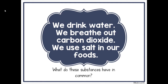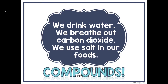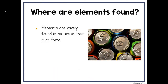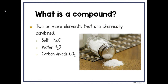We drink water, we breathe out carbon dioxide, we use salt in our foods — what do these substances have in common? They're all compounds. Elements are rarely found in nature in their pure form; they're usually found in compounds. A compound is two or more elements that are chemically combined. Salt is NaCl — sodium and chlorine. Water is H2O — hydrogen and oxygen. And carbon dioxide, CO2, is carbon and oxygen.